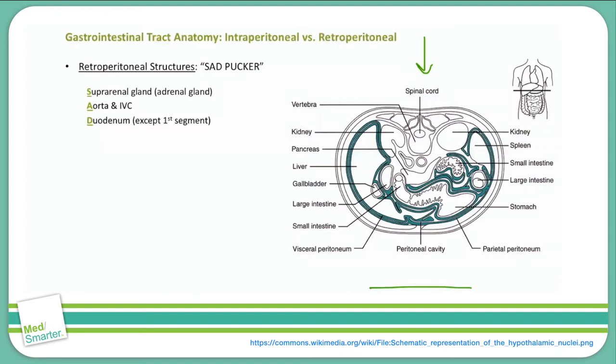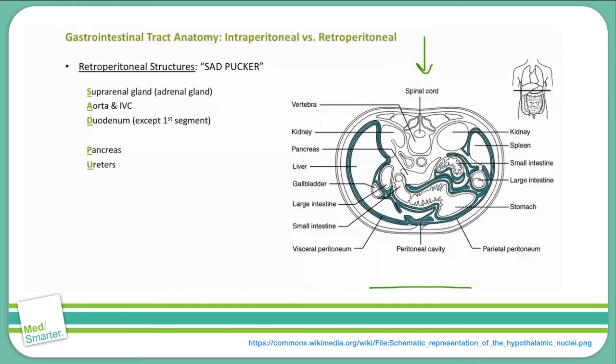D is for duodenum. It's important to note that the first portion of the duodenum is intraperitoneal, while the second through fourth portions are retroperitoneal. P is for pancreas. U is for ureters, which carry urine from the kidneys to the bladder.